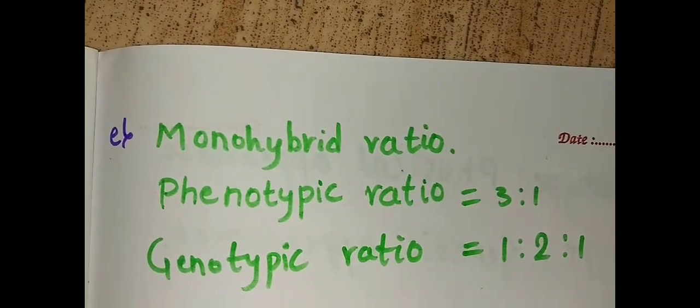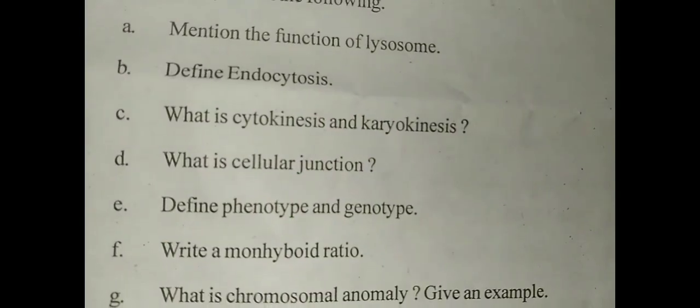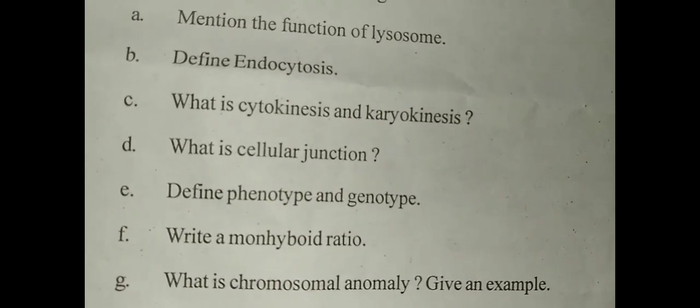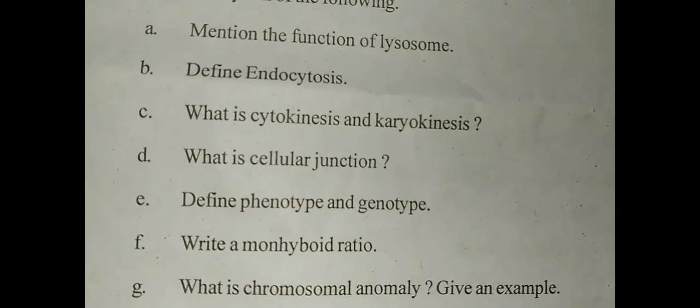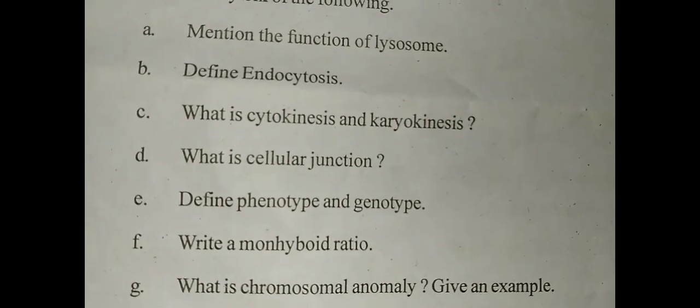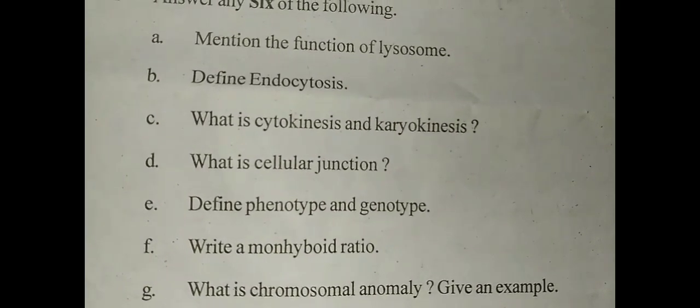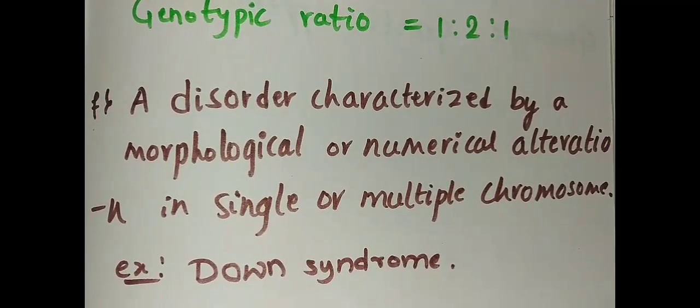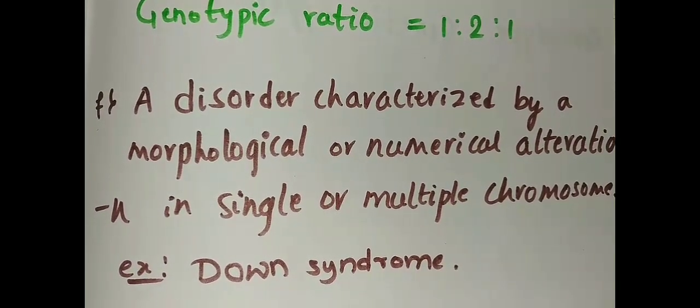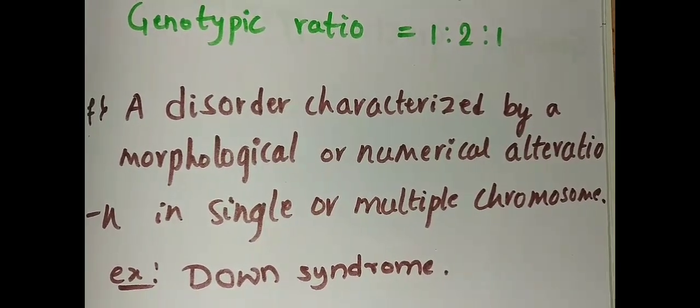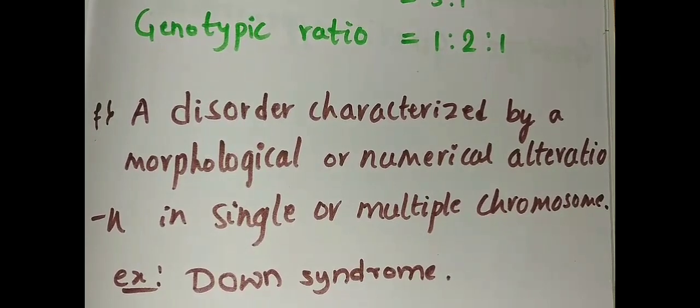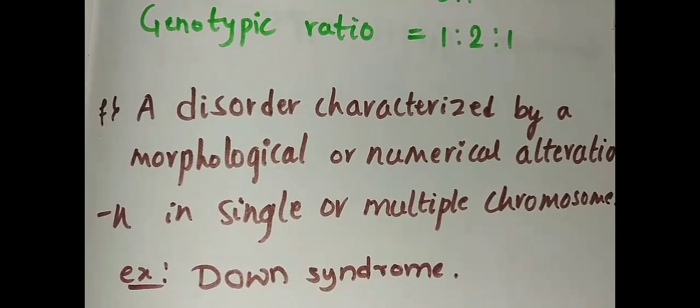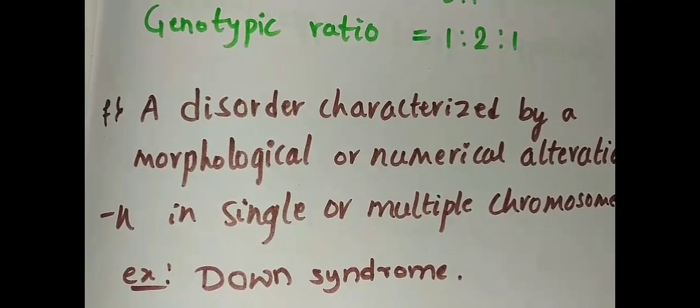The next question is what is chromosomal anomaly? Give an example. Chromosomal anomaly is also called chromosomal abnormality. The answer is a disorder characterized by a morphological or numerical alteration in single or multiple chromosome. The example for this is Down syndrome.